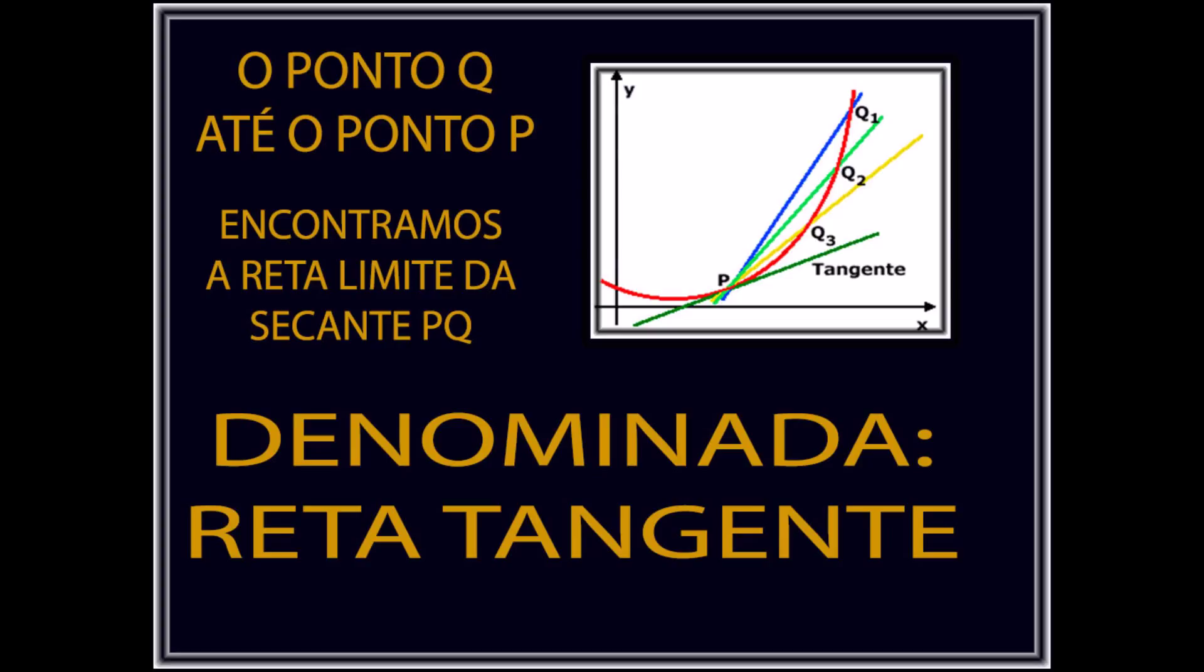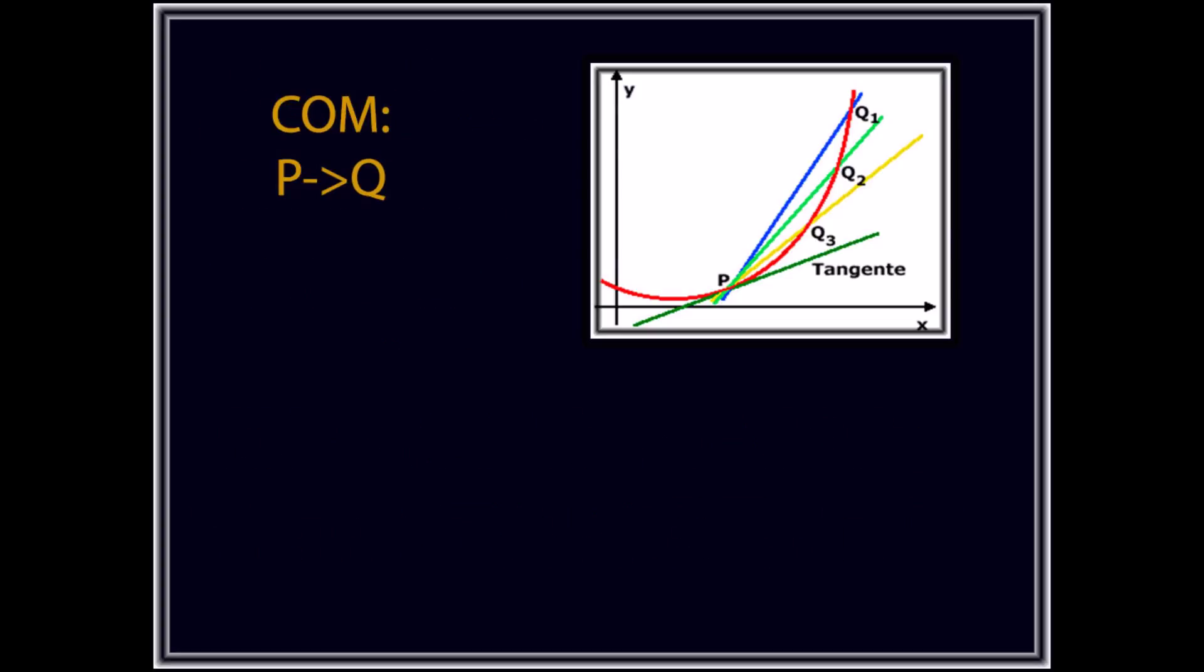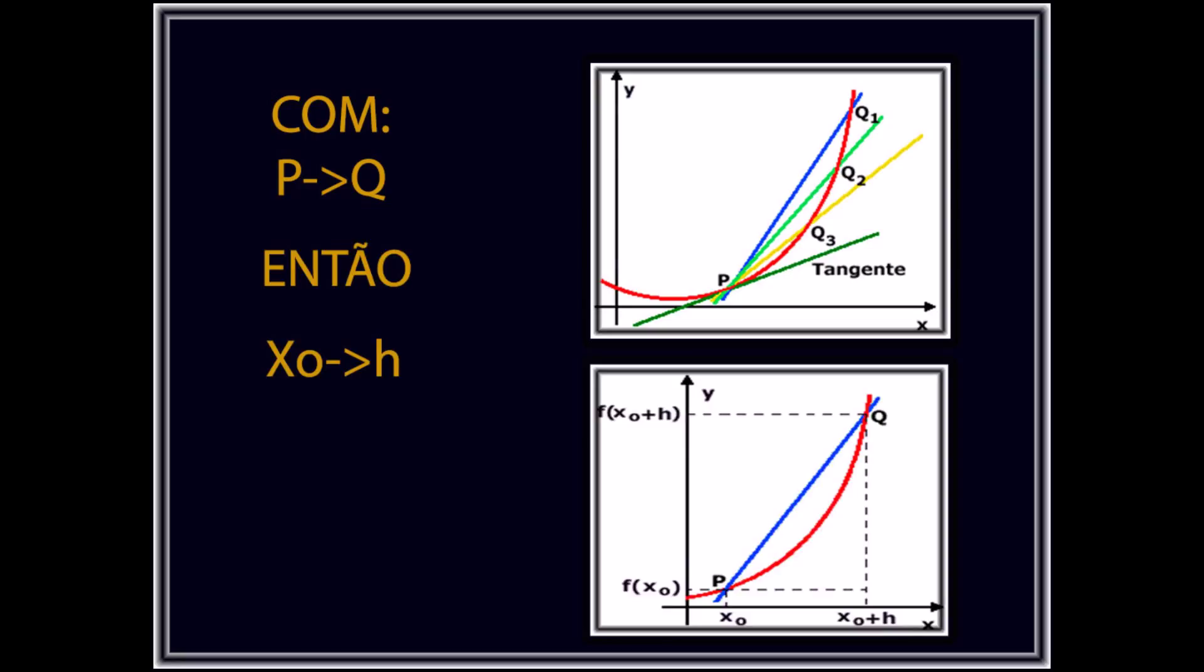Esta redução nas taxas de variação implica na transformação da velocidade escalar média em velocidade instantânea. Afinal, se P tende a Q, então x0 tende a h, logo h tende a zero.